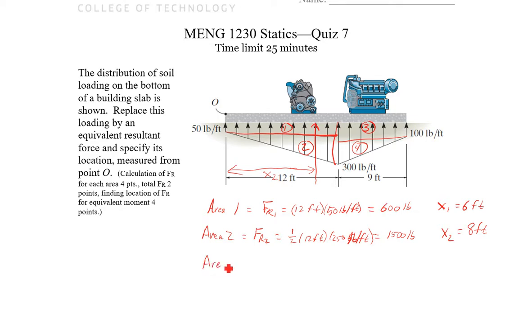Area three. FR3. We have another rectangle again, 100 pounds. And it's acting over nine feet now. So we have nine feet, 100 pounds per foot, 900 pounds. And it's going to be acting right in the middle here. So we have 12 feet plus four and a half. So X3 is 13.5 feet.